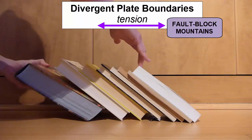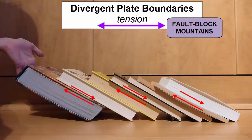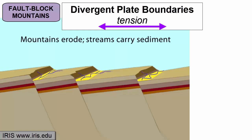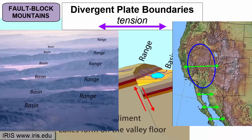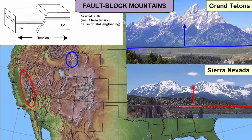Along each fault, the hanging wall slips down and the foot wall rises upward, bringing formerly deep and old rocks up to the surface and creating a series of linear mountain ranges separated on both sides by linear valleys. Tensional faults are called normal faults. Where tension is pulling apart the American Southwest as a continuation of the divergence in the Gulf of California, we see spectacular examples of the alternating valleys and ridges — basins and ranges — produced through tension. Both the Grand Tetons' eastern edge and the Sierra Nevada's eastern edge are normal faults along which these mountains rise upward out of the earth.